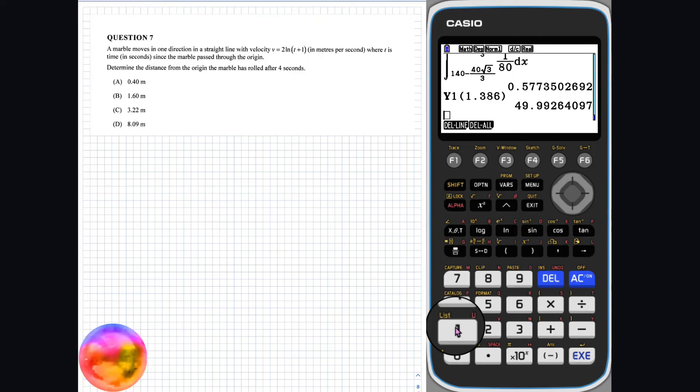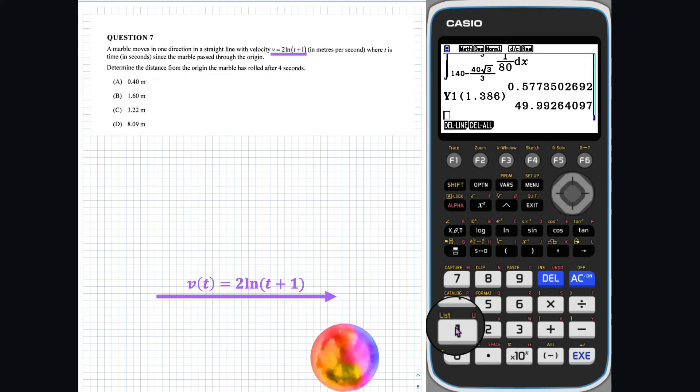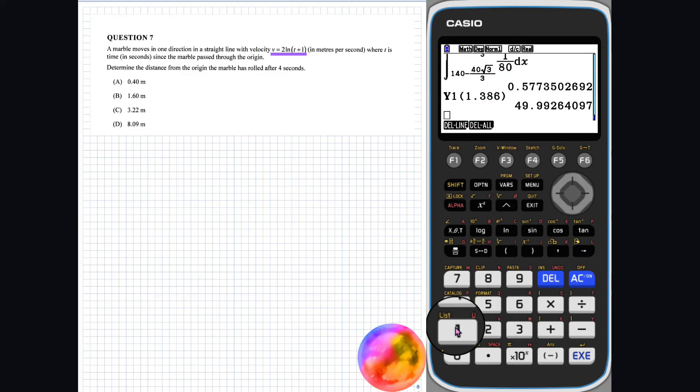Question 7. Our marble is moving in a straight line with a velocity v equal to 2 ln of t plus 1, where t represents the time in seconds since the marble passed through the origin. To evaluate the displacement, we can use the fact that displacement is equal to the integral of velocity with respect to time. We need to determine the distance travelled in 4 seconds.